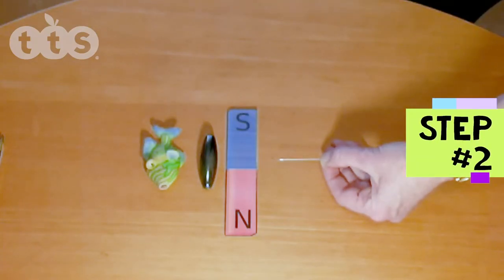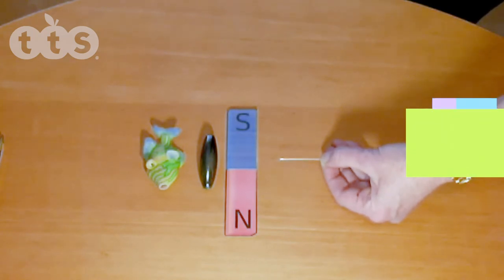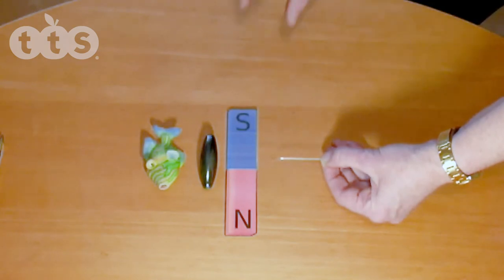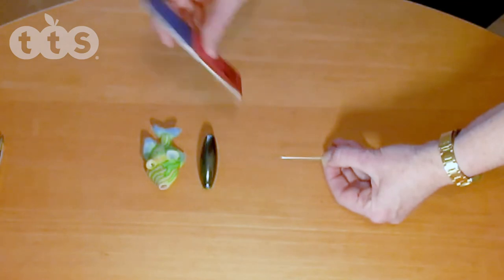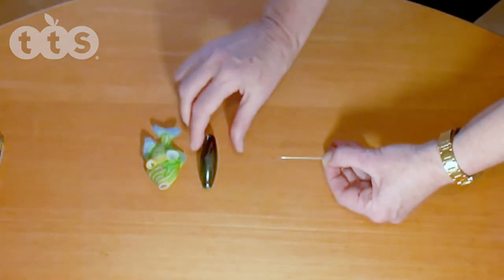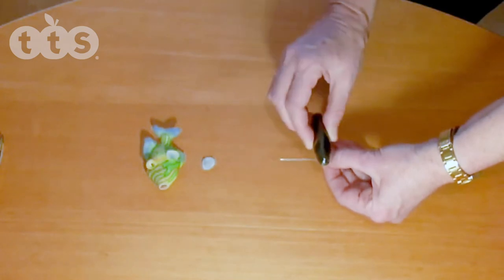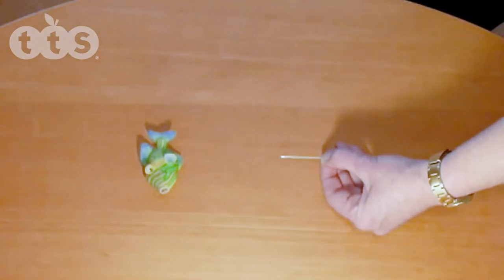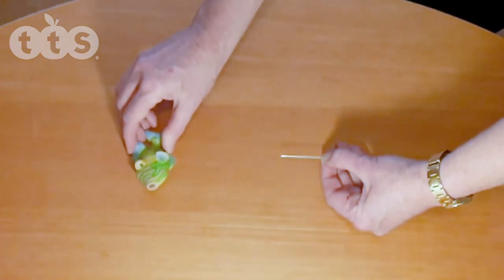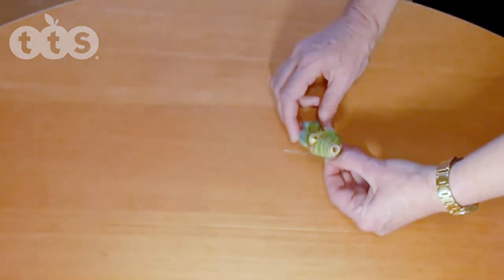Step two is to magnetize the needle. Hold the needle by the eye end so that you don't spike yourself and stroke it 20 times with one pole of a magnet. If you're using a bar magnet, use one of the ends. If you have an oids, use one of the scratched sides. If using a fridge magnet, just use the back. You have to lift the magnet away from the needle on the return stroke like this.